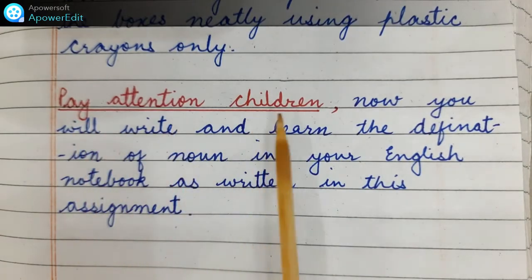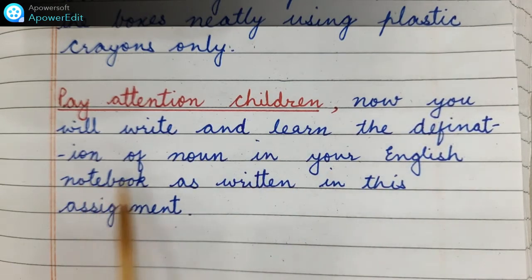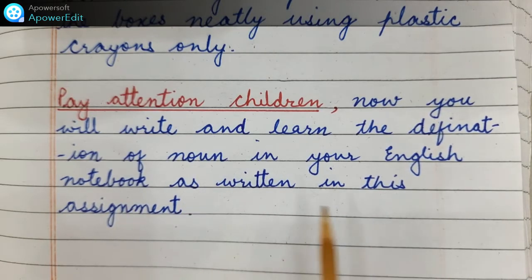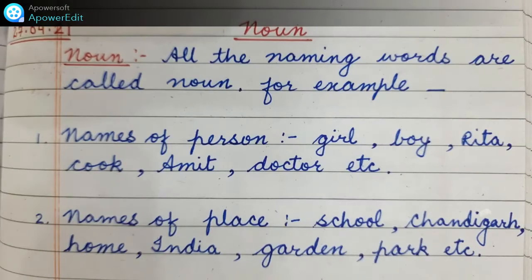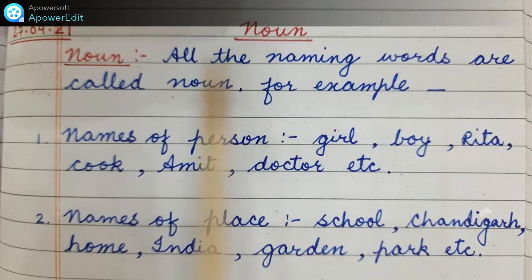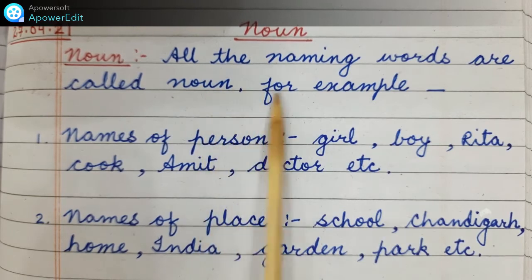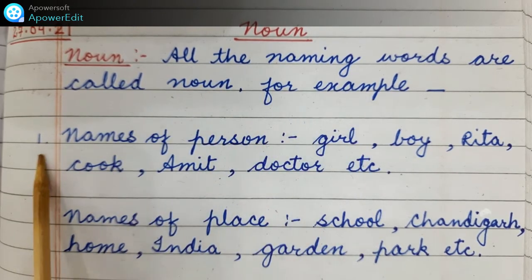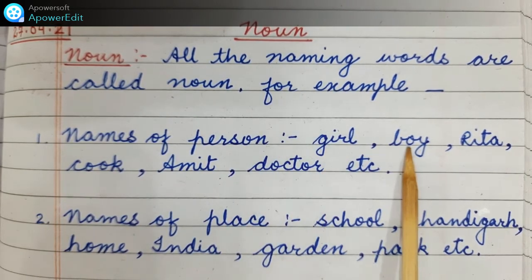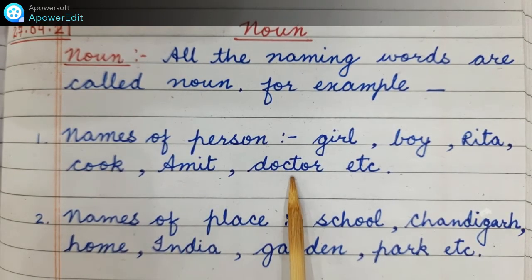Pay attention children. Now you will write and learn the definition of noun in your English notebook as written in this assignment. Noun: all the naming words are called noun. For example, first, names of persons: girl, boy, Rita, cook, Amit, doctor, etc.